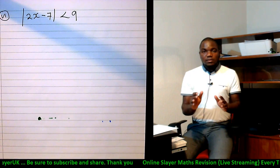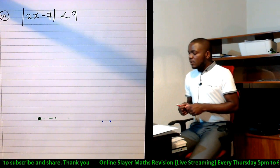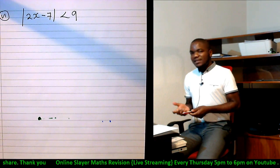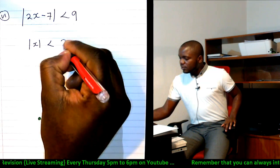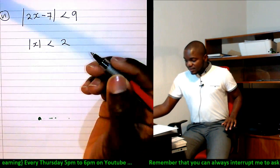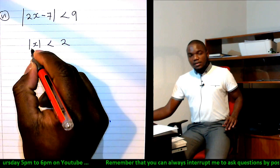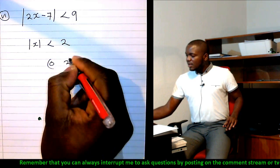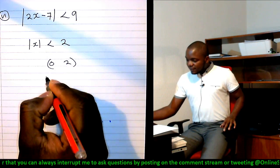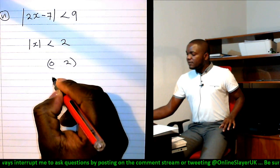Now, when you talk about an absolute value being less than a number, for instance, when you say absolute value of x is less than 2, what it means is that if x were a positive value, it should be between 0 and 2. If x were a negative value, it should be from minus 2.